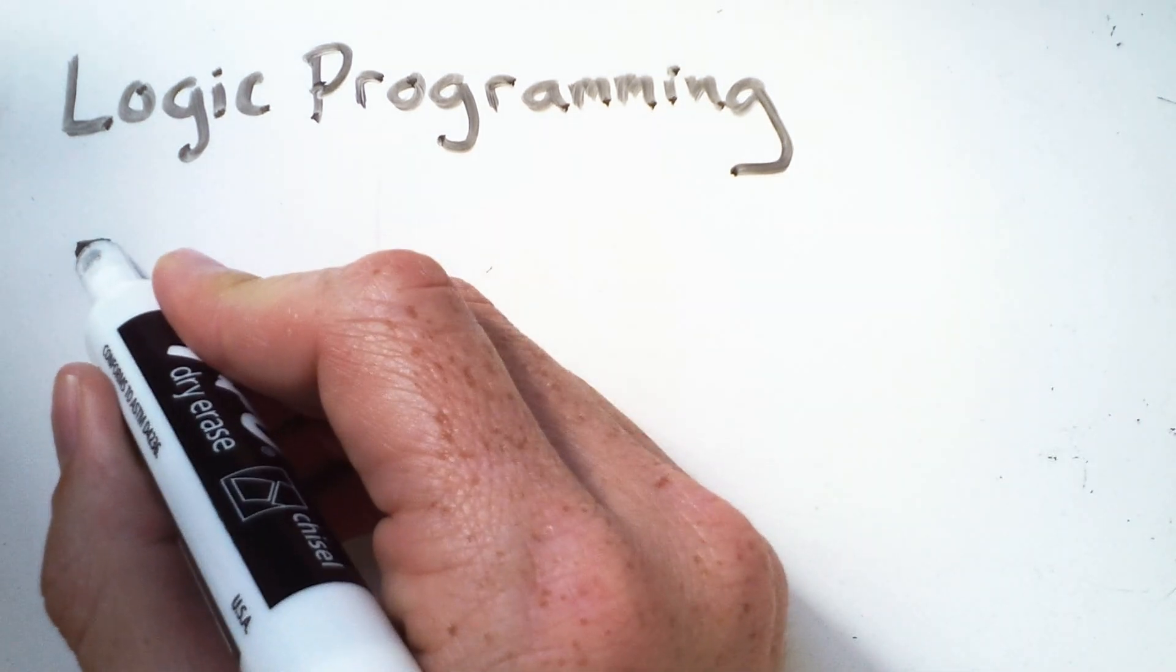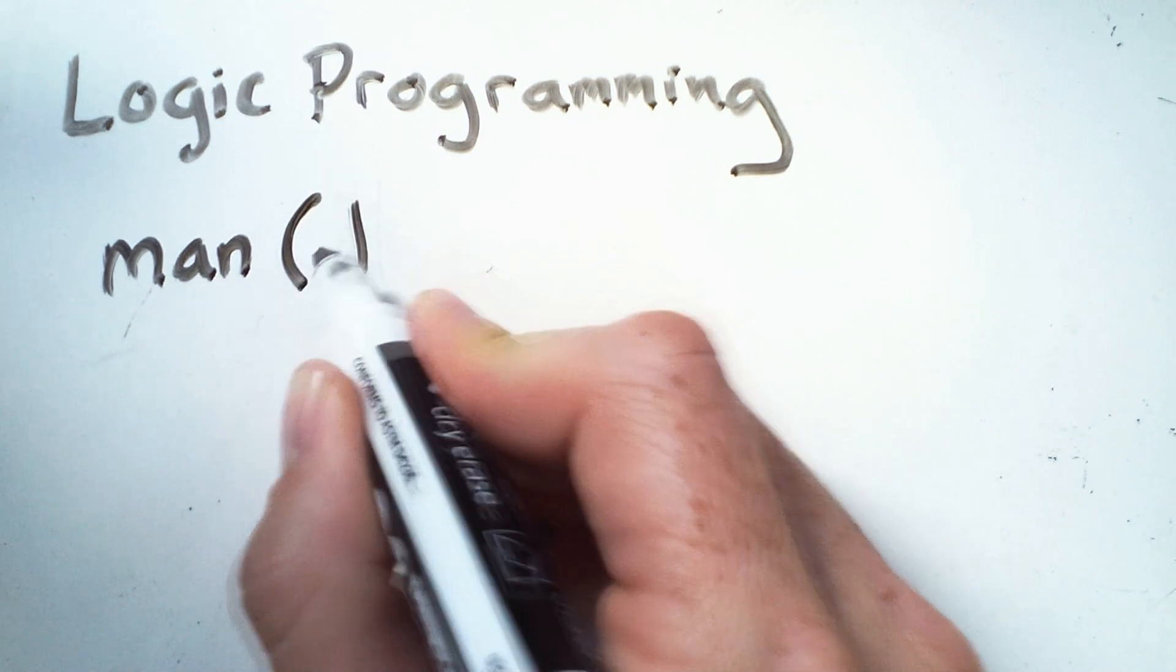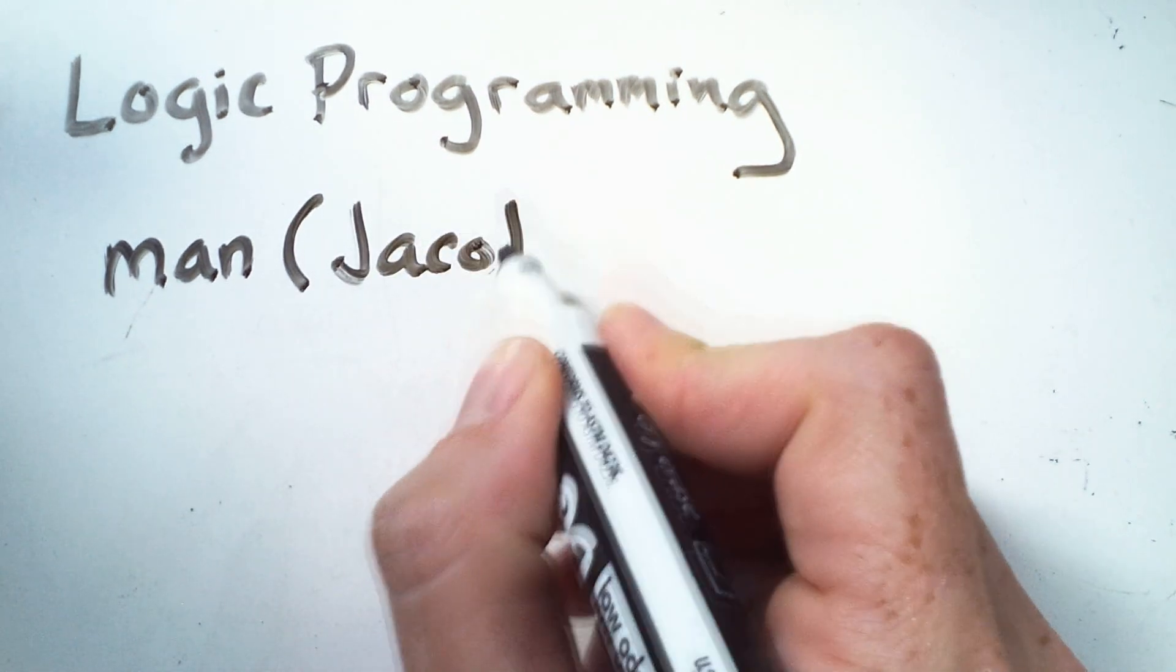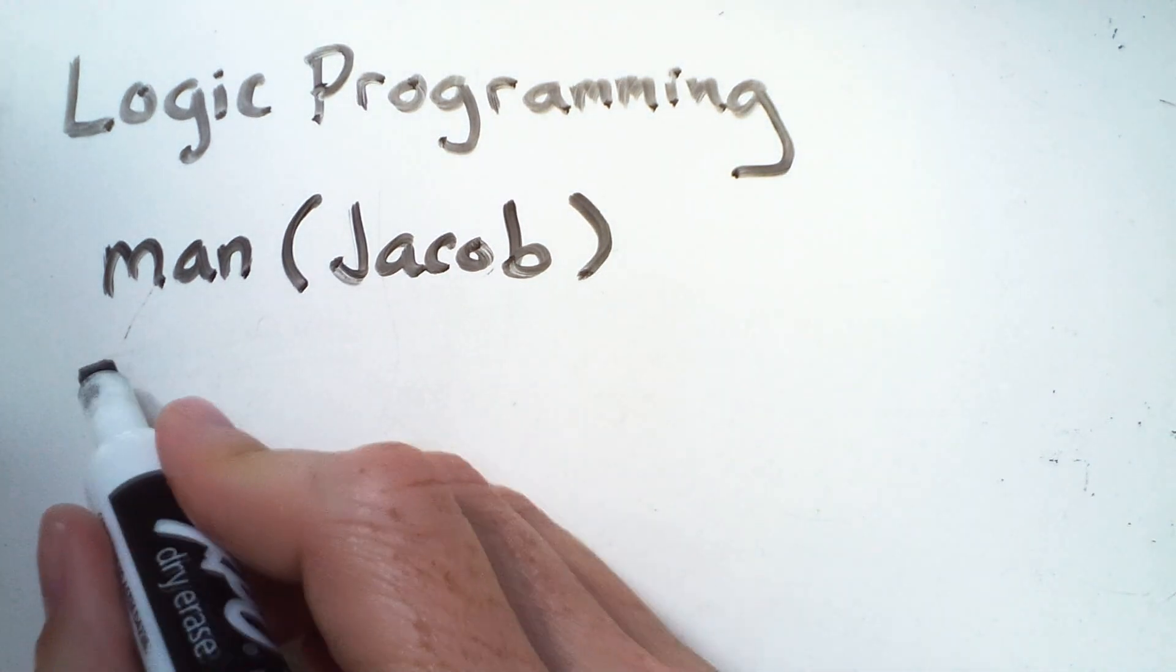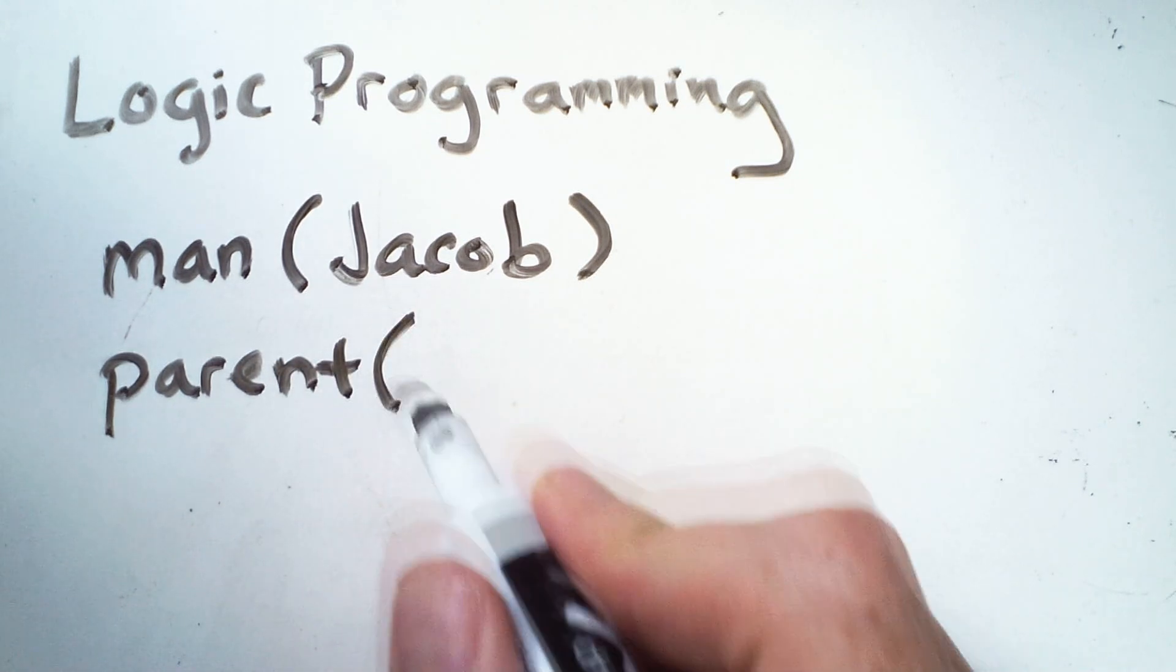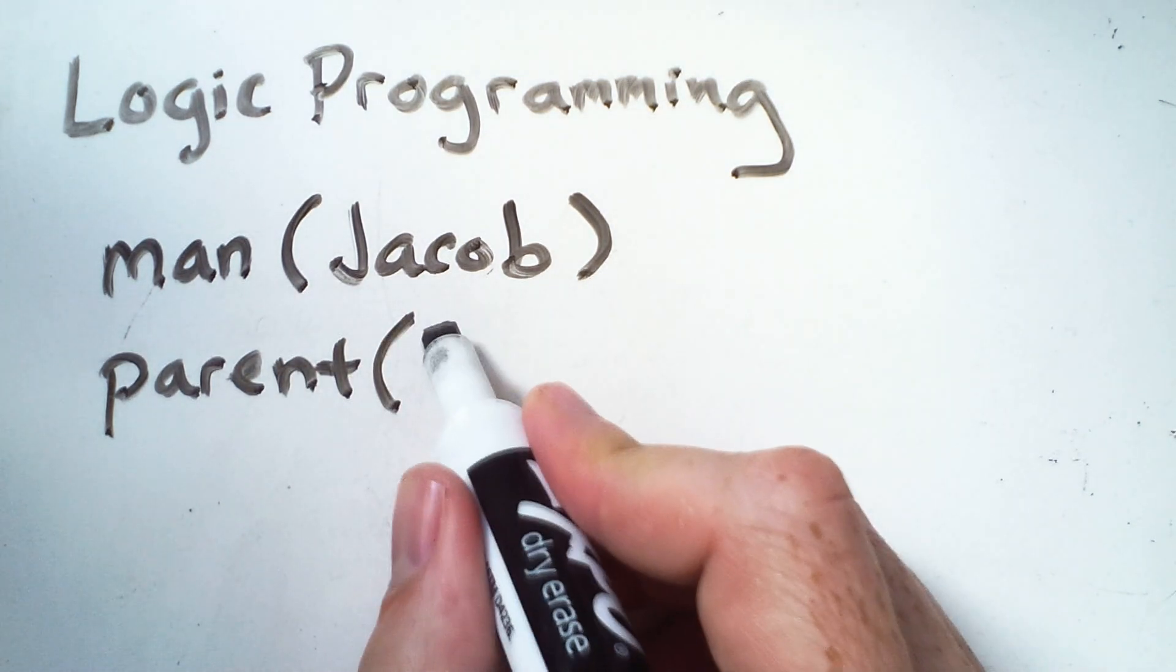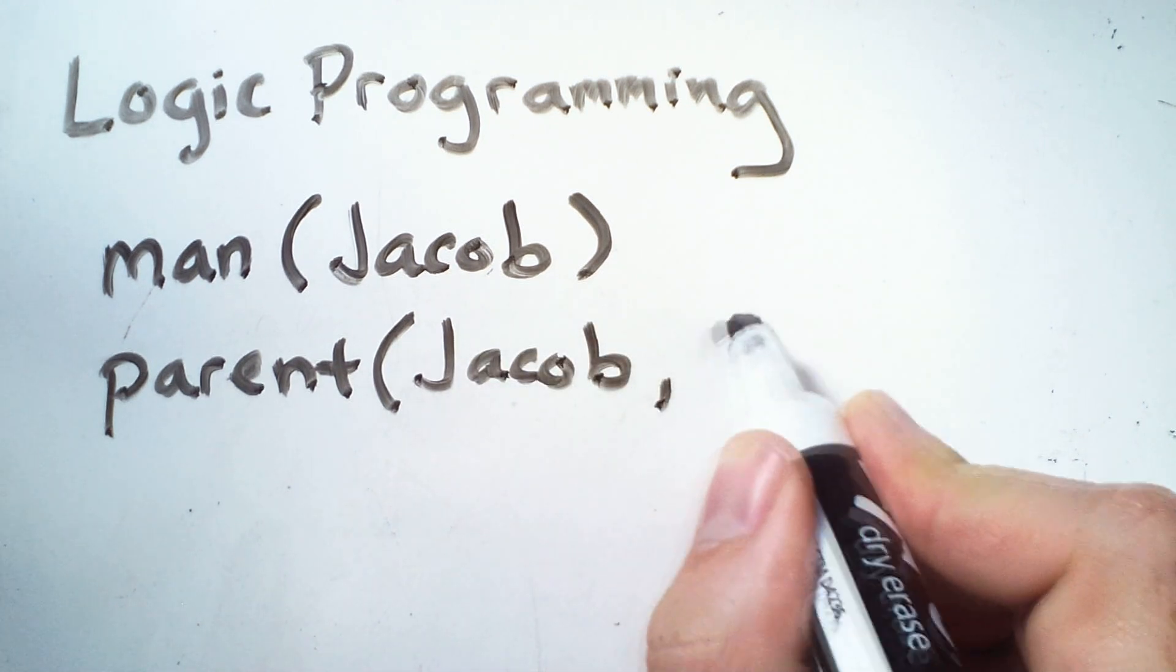For example, we could have a predicate man that indicates that Jacob is man. Or we could have a predicate parent that indicates some sort of relationship between Jacob and Eli.